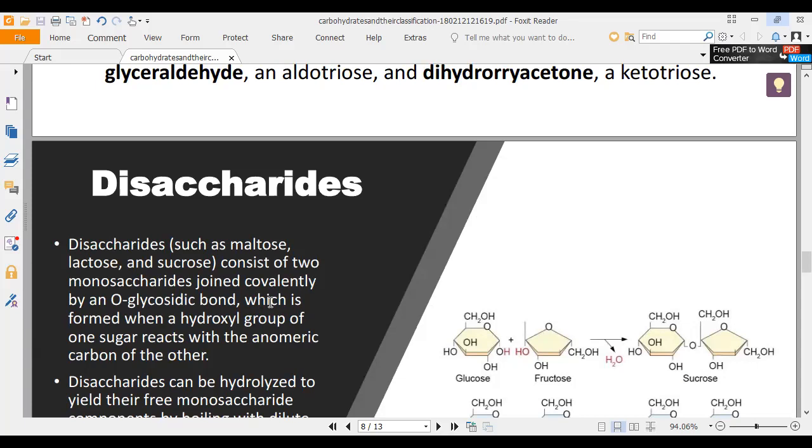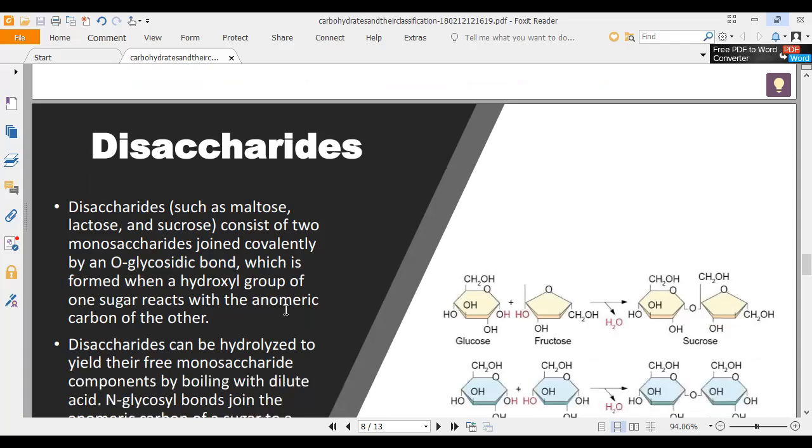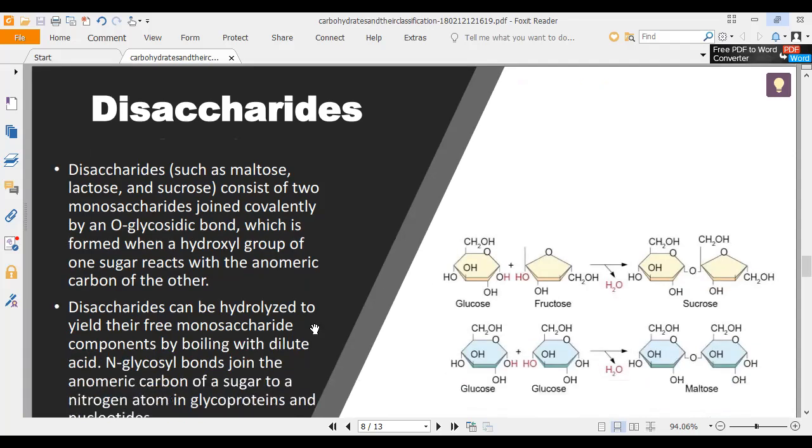Disaccharides can be hydrolyzed to yield the free monosaccharide components by boiling with dilute acid. N-glycosidic bonds join the anomeric carbon of a sugar to a nitrogen atom, as in glycoproteins and nucleotides.